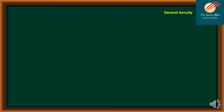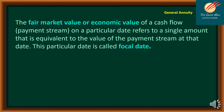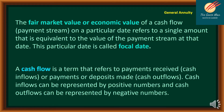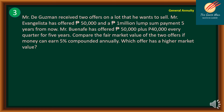For better decision-making on investments, especially counter offers, we need to determine the fair market value. The fair market value, or economic value, of a cash flow or payment stream on a particular date refers to a single amount equivalent to the value of the payment stream at that date. This particular date is called the focal date. Cash inflows are payments received, represented by positive numbers; cash outflows are payments or deposits made, represented by negative numbers.